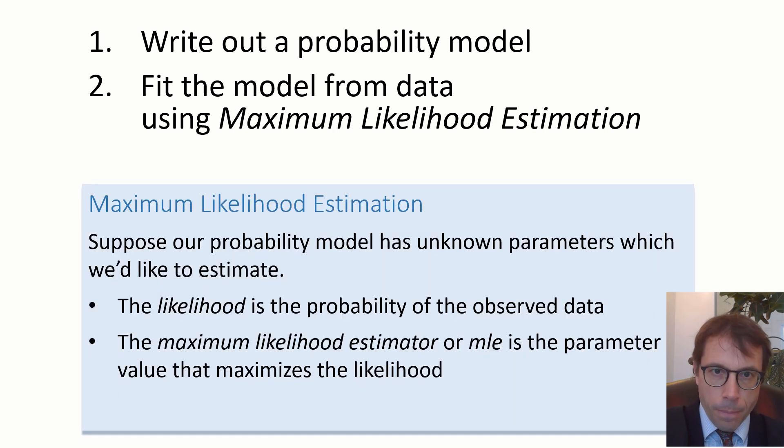Here's the definition. We're supposing our probability model has unknown parameters which we'd like to estimate. First, write down the likelihood, which is just the probability of seeing the data that we actually did see. The model has parameters, so the likelihood must be a function of those parameters. We just do the obvious thing and choose the parameter values that maximize the likelihood. The optimum set of parameters is called the maximum likelihood estimator or MLE.